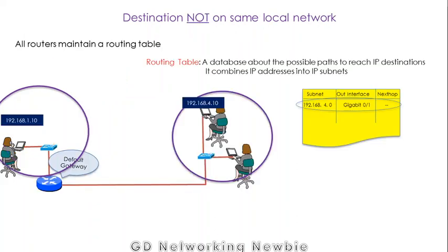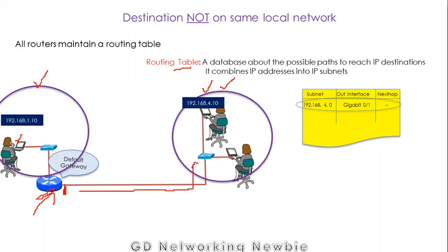In the next scenario we discussed that there are two networks but both networks are connected with a default gateway or default router. So if one user on one network wants to send data to another user available on a network directly connected to one of the interfaces of the default gateway, we saw that with the help of the routing table we can forward the packet to that network using the appropriate encapsulation for that medium.